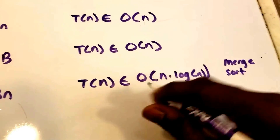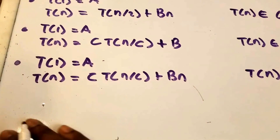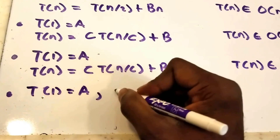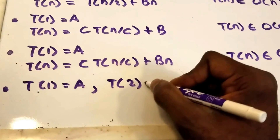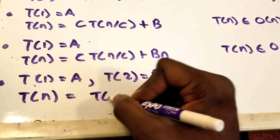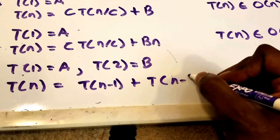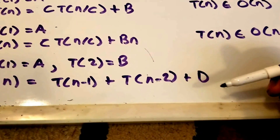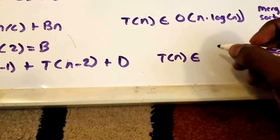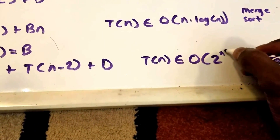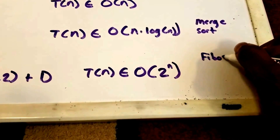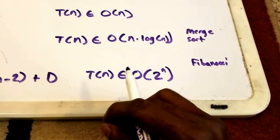We're going to do one more. Let's say we have a base case T(1) = a and another base case T(2) = B. Then we have our recursive case T(n) = T(n-1) + T(n-2) + d, where d is some non-negative integer value. Then the complexity here is T(n) belongs to O(2^n), and a popular algorithm here would be the Fibonacci algorithm.